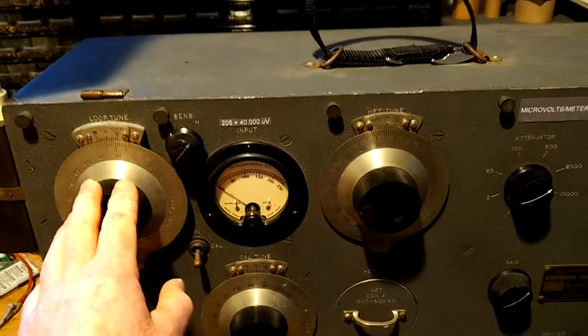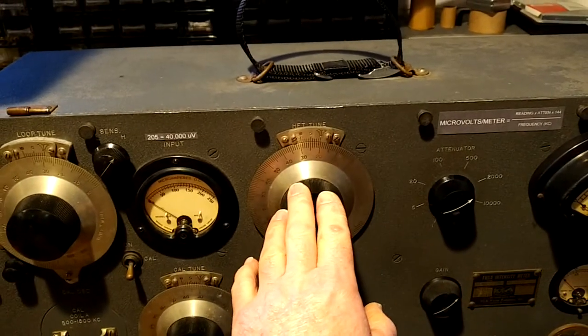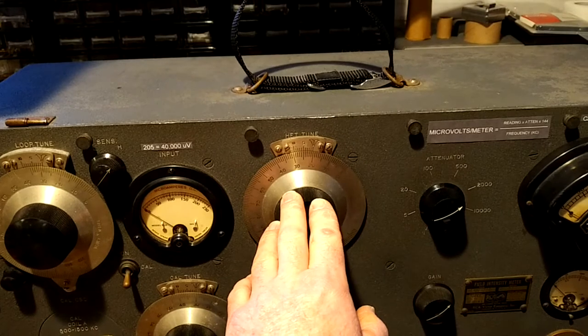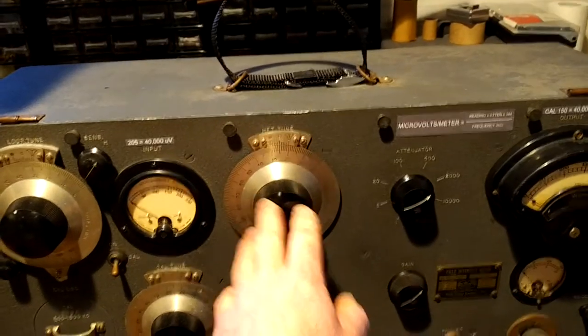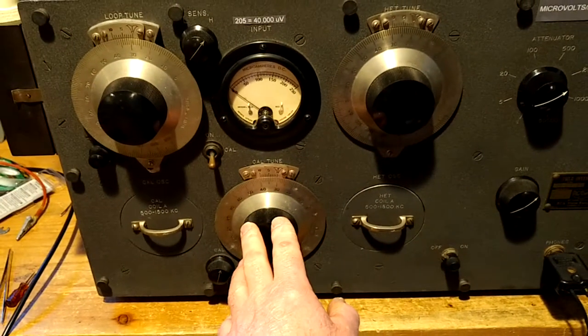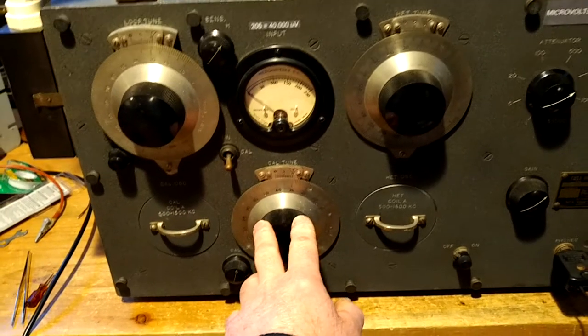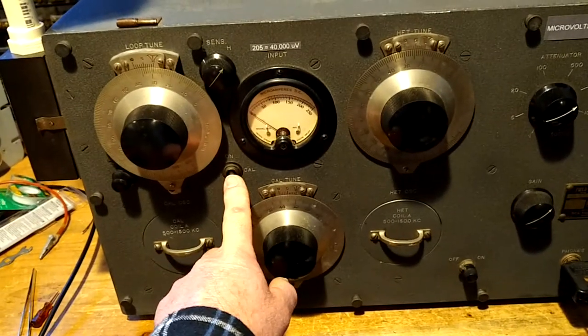This is the loop frequency. This is the local oscillator for the superheterodyne mixer frequency to beat to get to the 300 kilohertz IF. And this is the calibrating oscillator or transmitter frequency. The transmitter can be turned on and off here.